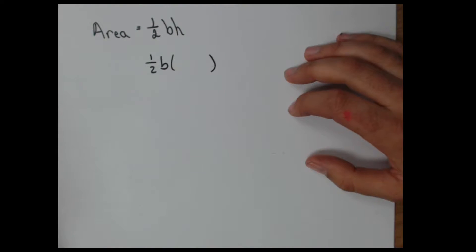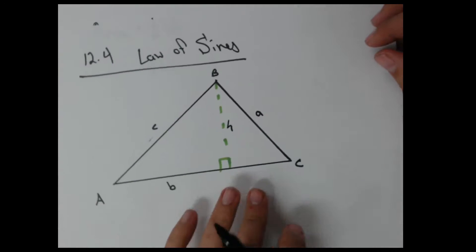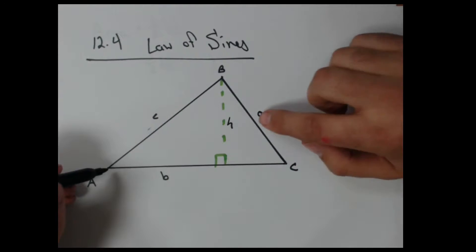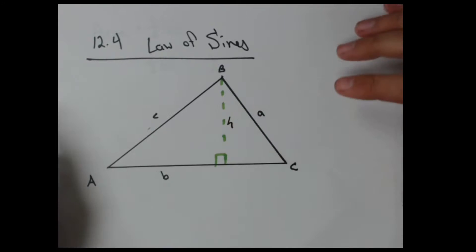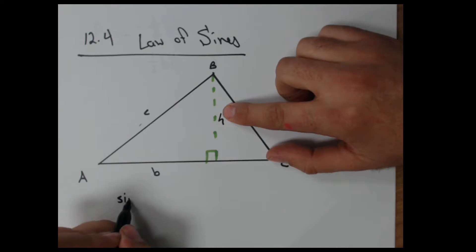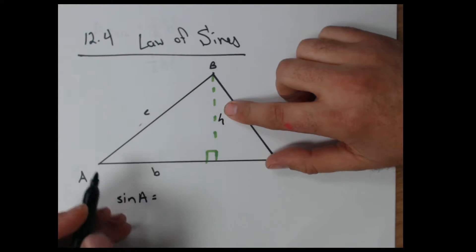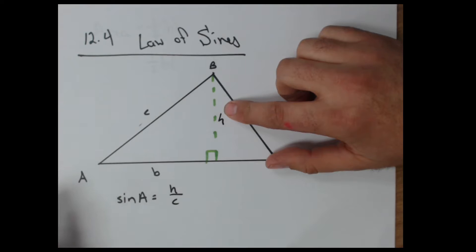I'm going to use trigonometric functions to tell me what H is. So let's use angle A. And I want to find out what H is. So that's my opposite of this angle. Well, sine of angle A equals opposite over my hypotenuse for this, which is C. So H over C. And again, I want to solve for H, so I multiply both sides by C. So C times sine A equals H.